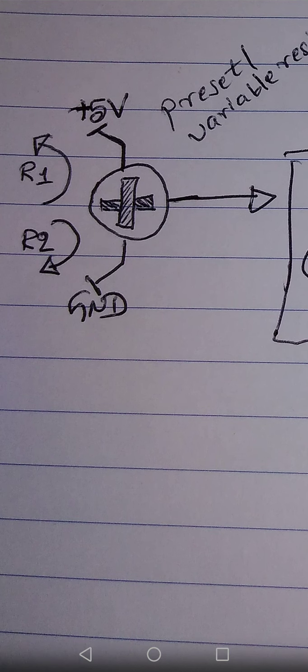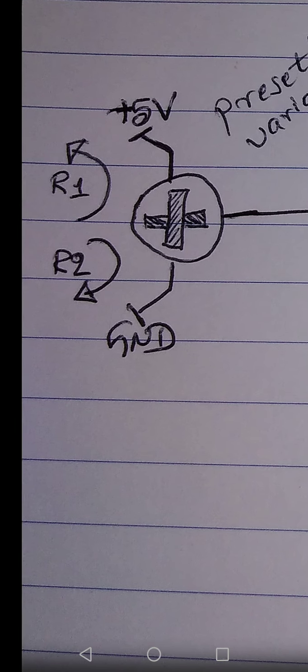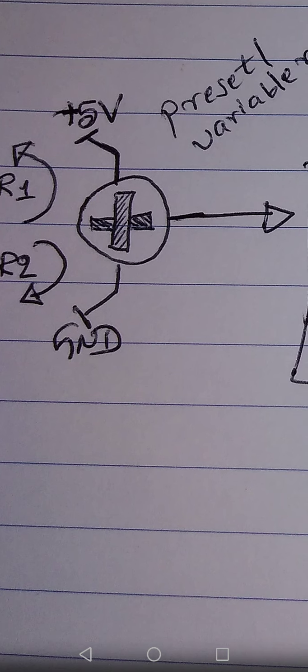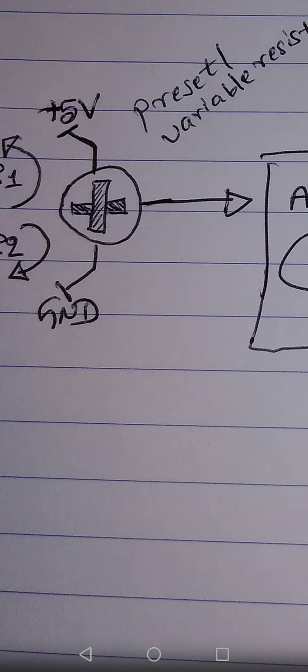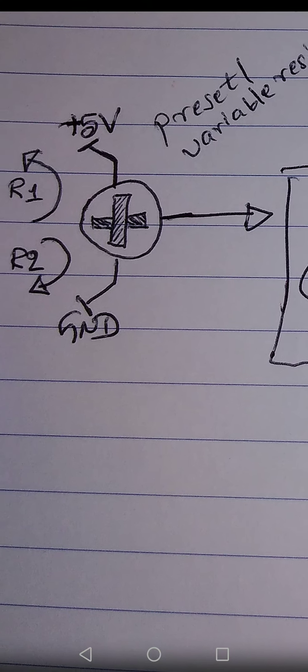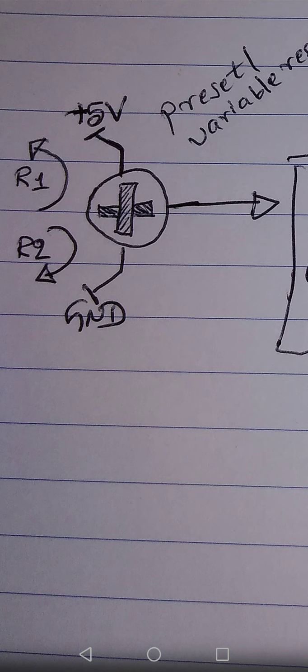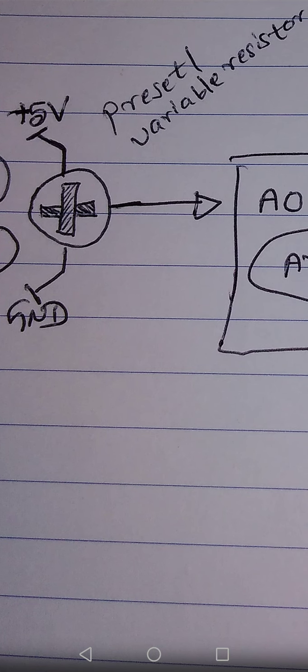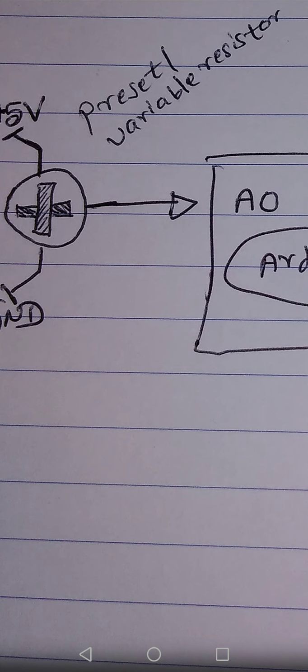If you rotate the screwdriver in the R1 direction — which you can see in the diagram — the voltage at the middle pin will increase, because you are rotating toward the five-volt side. Resistance increases and voltage increases, so the analog input value also increases. When R1 is at its topmost point, the middle pin's voltage is five volts, meaning A0 will give you 1023.